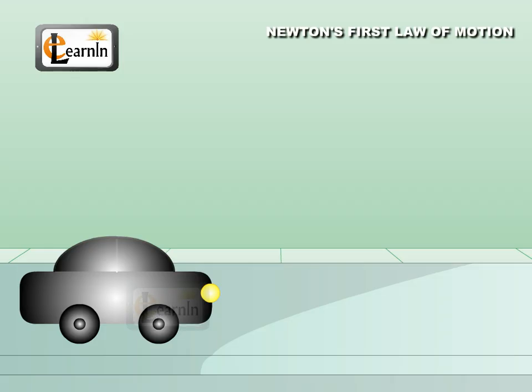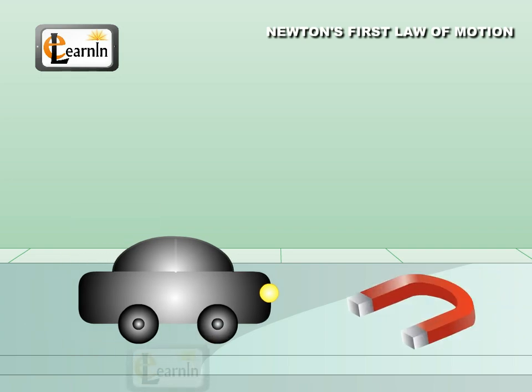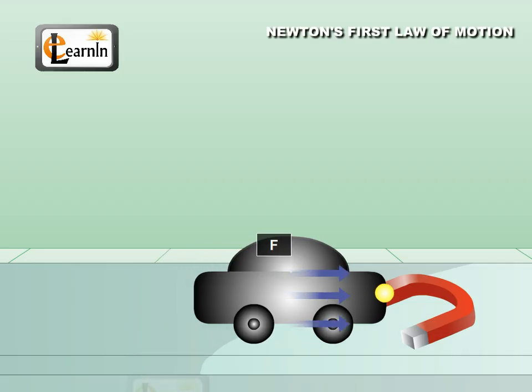There are ways of moving the toy car without touching it. For example, take a toy car which is made of iron and put it on a smooth table. If you hold a powerful magnet in front of it without touching the car, the car begins to move towards the magnet.